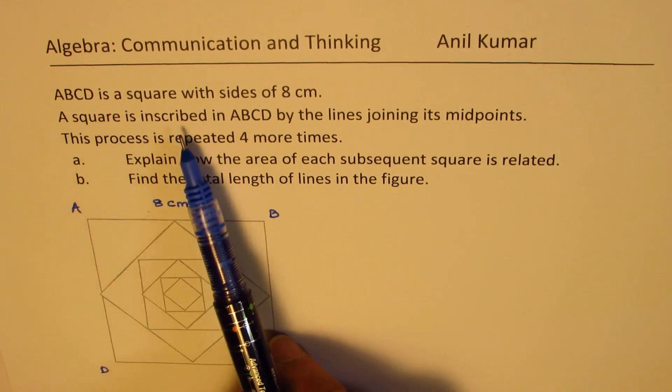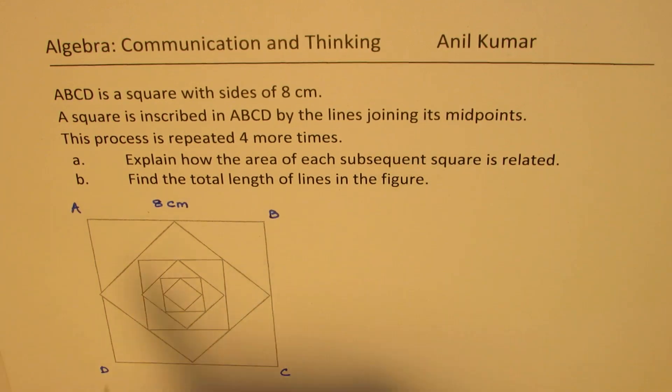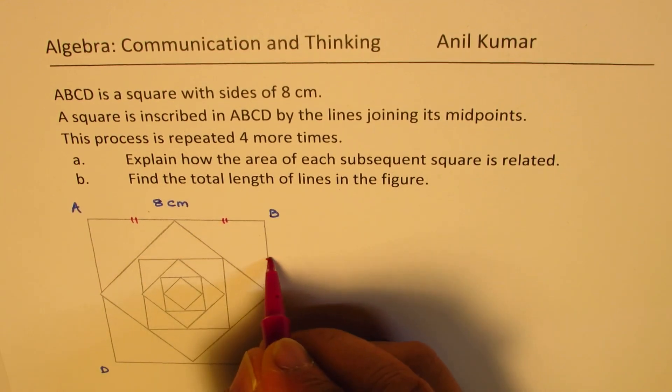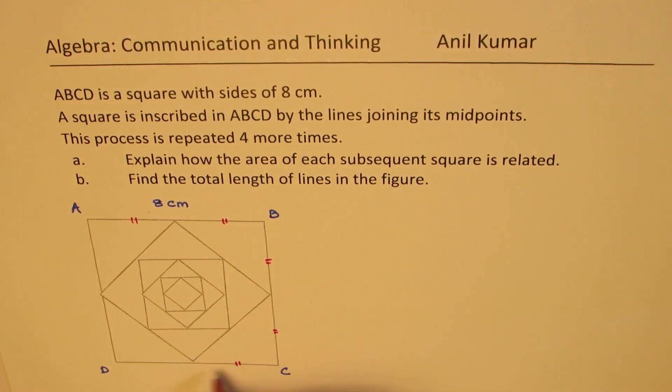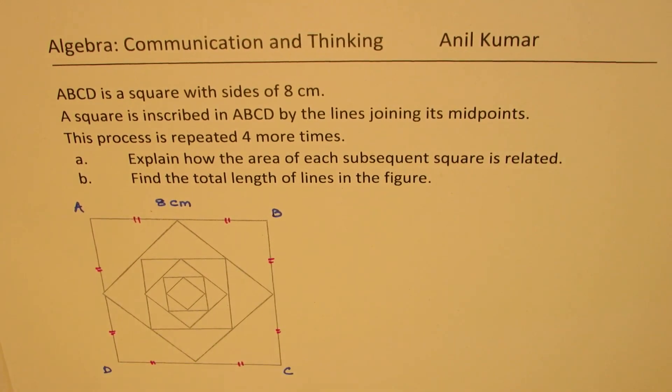A square is inscribed in ABCD by lines joining the midpoint. That is a midpoint. That means this side is equal to that side. So these sides are equal. If you join midpoints of a square as shown here, you actually again get a square inscribed in it.